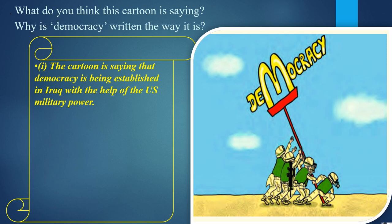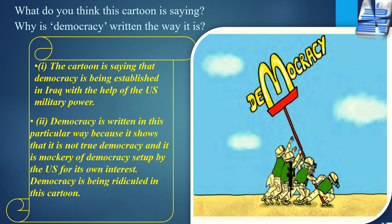Question 2: Why is democracy written the way it is? The 'M' signifies the role of the army in bringing democracy to Iraq. Democracy is written in a particular way because it shows that it is not true democracy — it is a mockery of democracy set up by the US for its own interest.